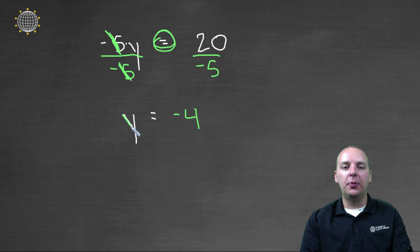So if we look back at the original problem, if y was equal to negative four, let's see what we get. Negative five times negative four sure enough is positive twenty. So this would be the solution to the equation here.